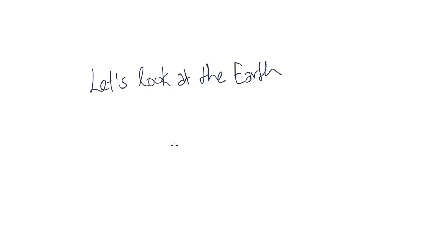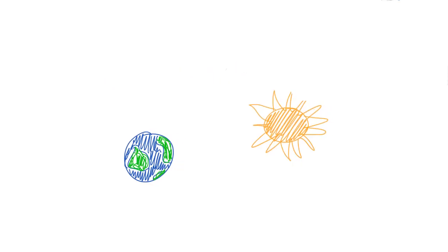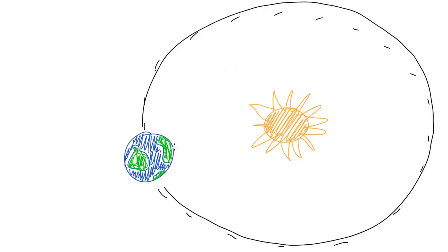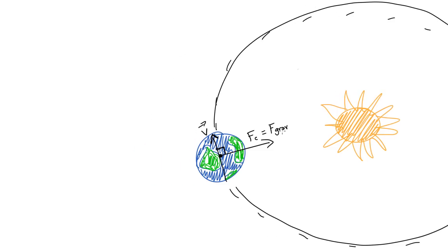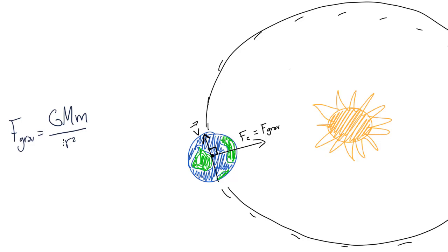So let's look at an object undergoing uniform circular motion — let's look at the Earth orbiting the Sun. While in reality this is not a perfectly circular orbit, we can approximate its motion as uniform circular motion. Because the Earth is undergoing uniform circular motion, the net force must be inward and exactly the right amount to keep the Earth orbiting, or else it wouldn't be following a circular path at a constant speed. Something must be providing this net force, and the only force acting on the Earth is gravity. So gravity is providing just the right amount of force to keep the Earth undergoing uniform circular motion. In other words, the centripetal force is equal to the gravitational force.